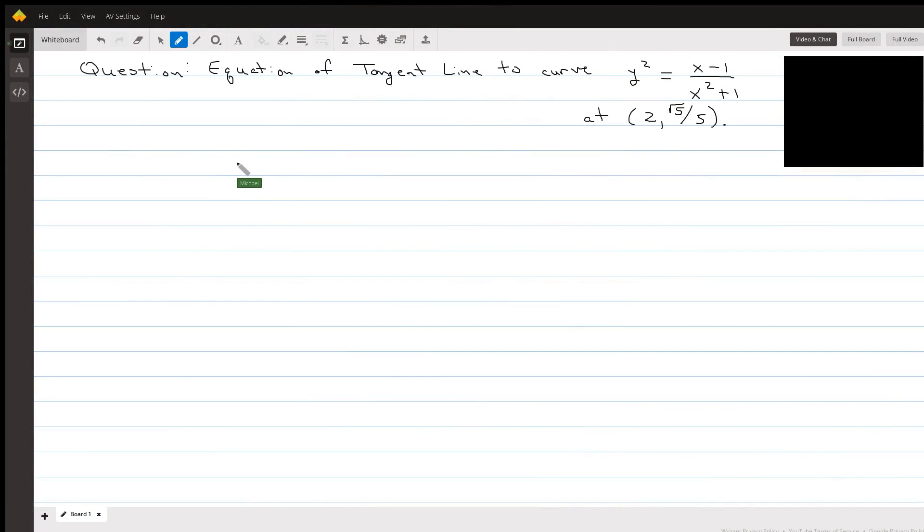To do this problem in its current form, I would have to apply quotient rules. So I like to avoid that, so I am going to start by multiplying both sides by x squared plus 1. So x squared plus 1 times y squared equals x minus 1.